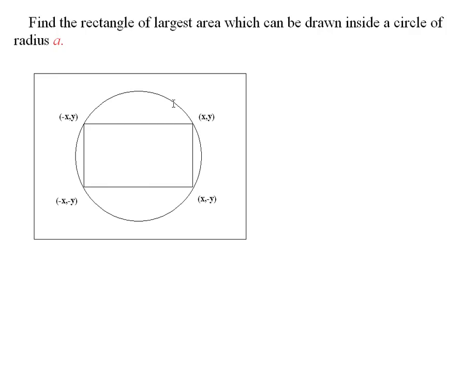You can imagine that, just based on the symmetry of the circle, that if (x,y) is the ordered pair of this point here, then you would have these be the ordered pairs of the other corners of the rectangle.